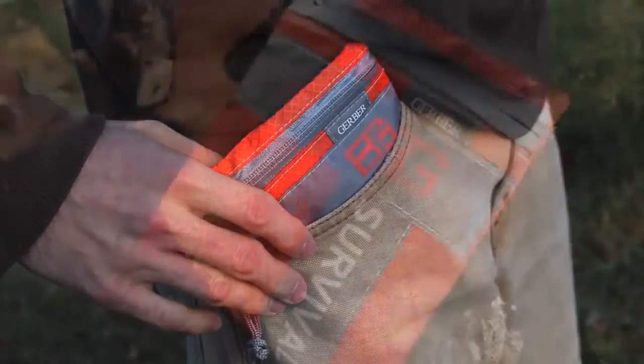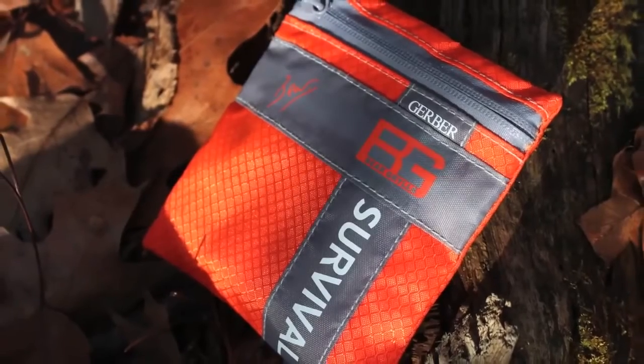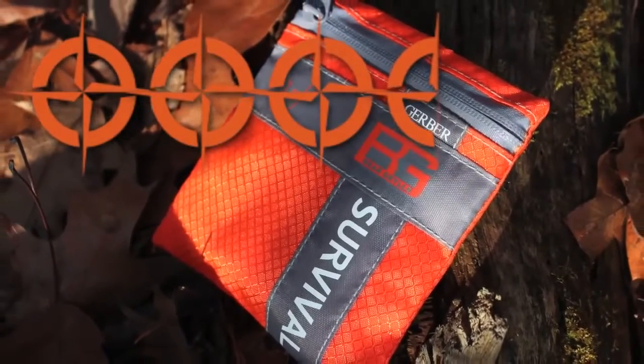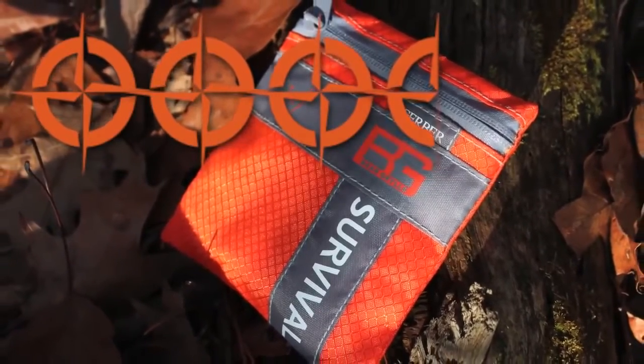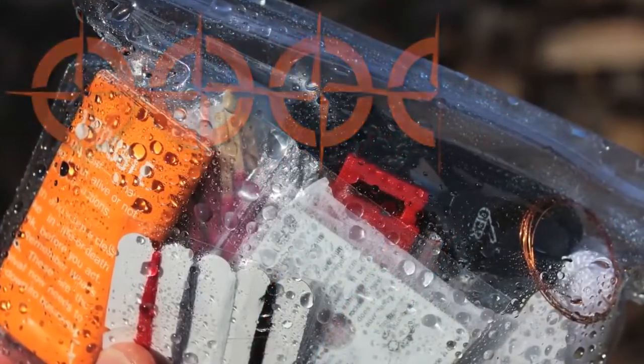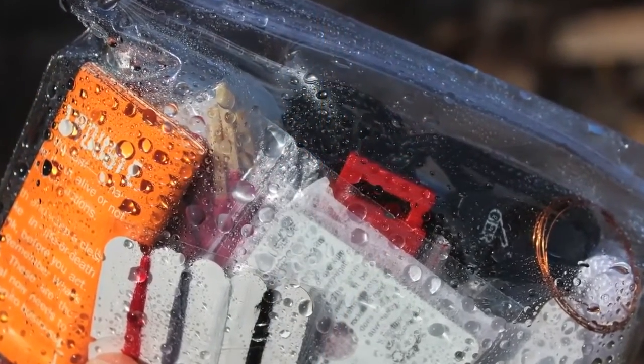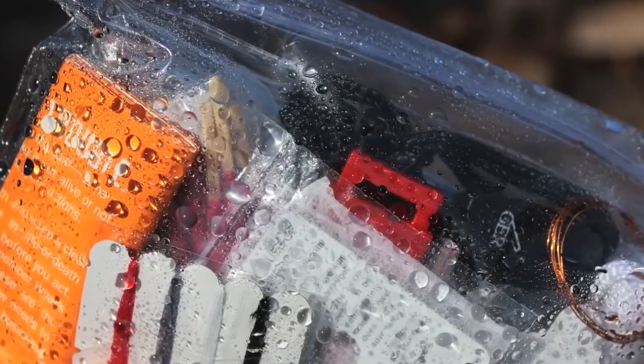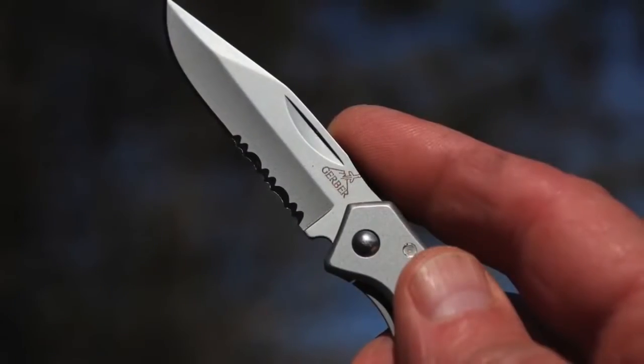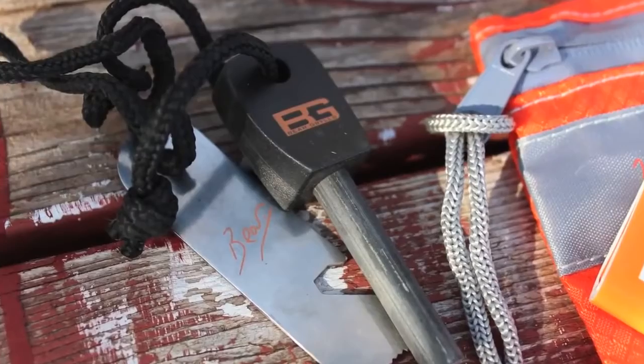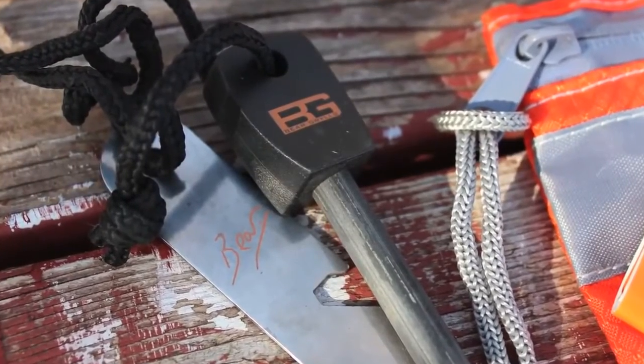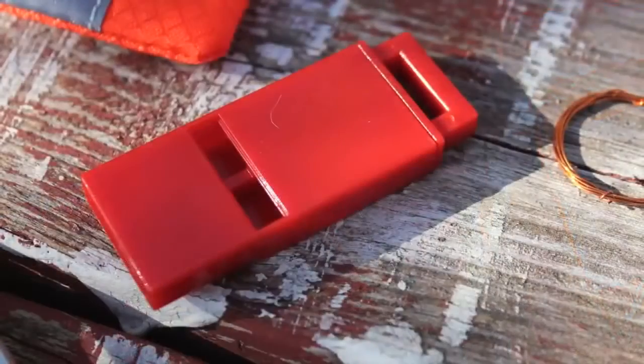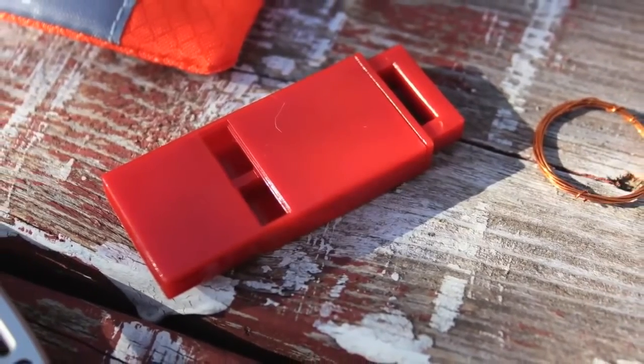We rate this kit at 3.5 out of 5 stars. We like its compact, near pocket size, and that most of the components are of good quality. At around a $19 online street price, it's a pretty good value considering that the mini paraframe knife and the fire steel would add up to around $20 alone. On the downside, although the whistle works, it just looks and feels cheap to me, although it is loud and does its job.